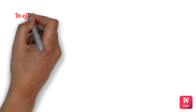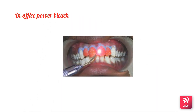In-office power bleaching refers to an accelerated version of in-office vital bleaching where the release of nascent oxygen from concentrated hydrogen peroxide is rapidly enhanced by exposure to a powerful light source such as a laser or xenon arc lamp. The anterior teeth are exposed to the laser or plasma arc lamp for a specified time; when the arc cycle is complete, the procedure is repeated if required. The gel is left in contact with the teeth for an additional five minutes, then removed with wet gauze and the teeth are cleaned with CPS water. This procedure is repeated for two or three visits until the desirable result is achieved.